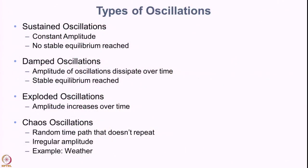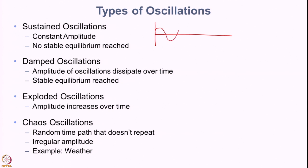Let us see what types of oscillations we typically encounter. Sustained oscillations are the first type — the state of the system oscillates over time without diminishing, continuing at constant amplitude with no stable equilibrium reached.